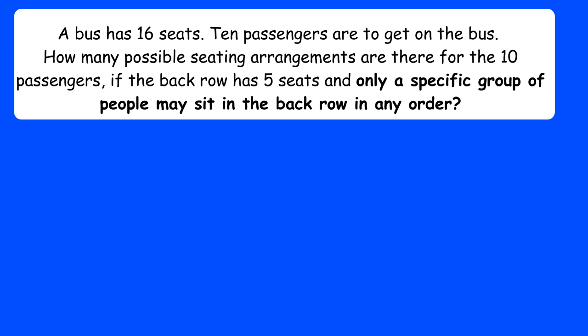At the back row we don't need to use permutation, because we are told there's already a specific group of five people that must sit at the back — we just want to know how many different ways we can arrange them. There are five people already chosen, so they can be arranged in five factorial ways, which is 120 different ways.